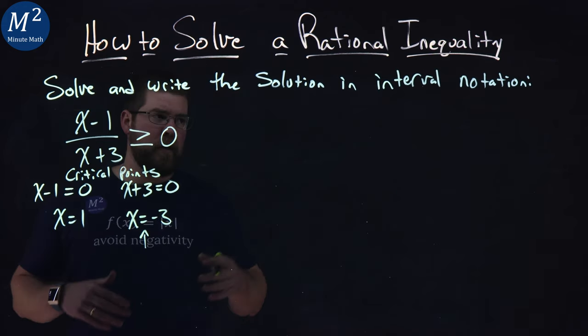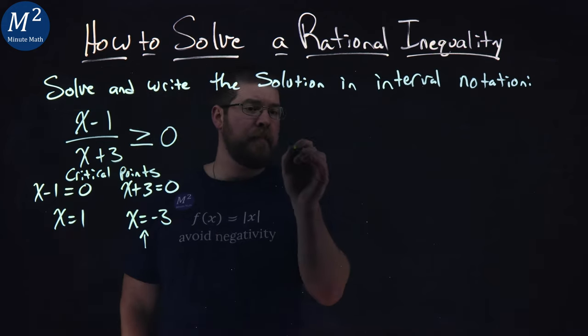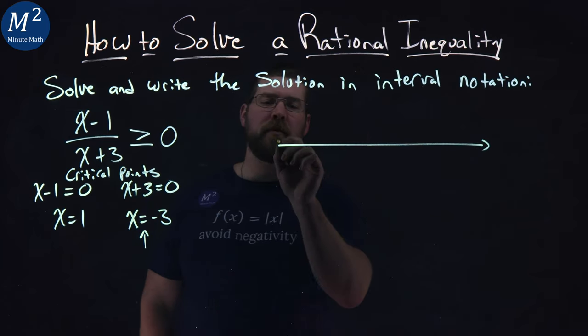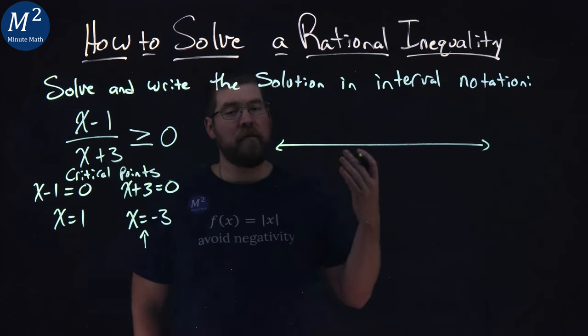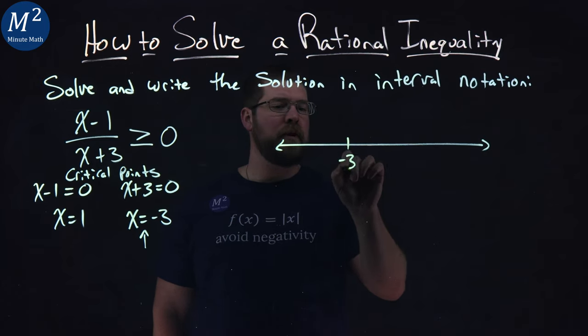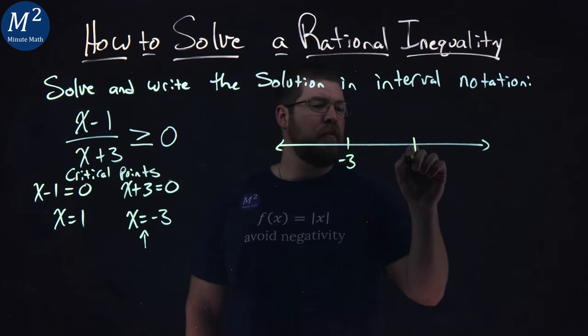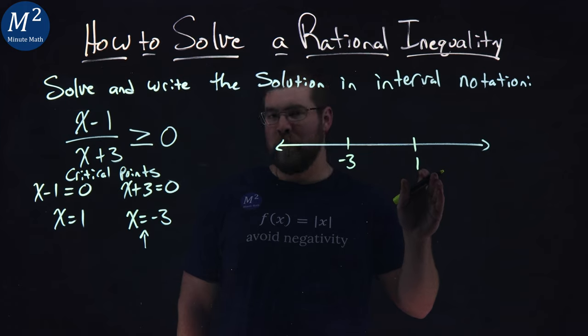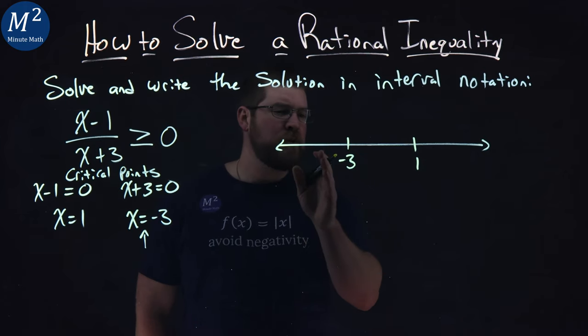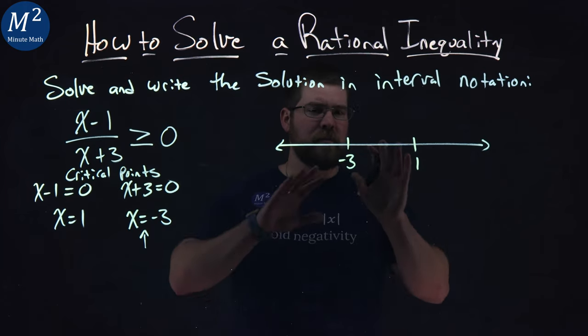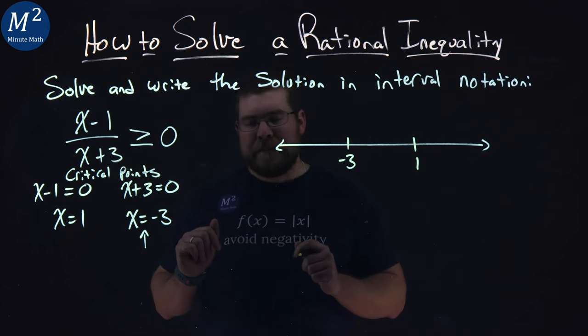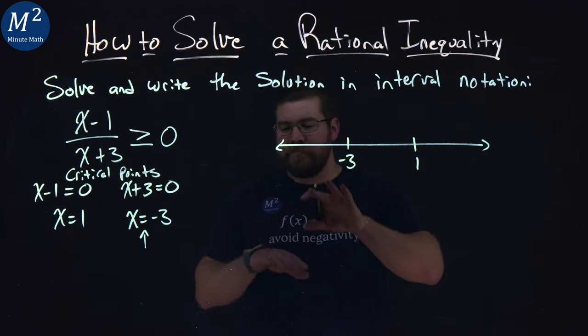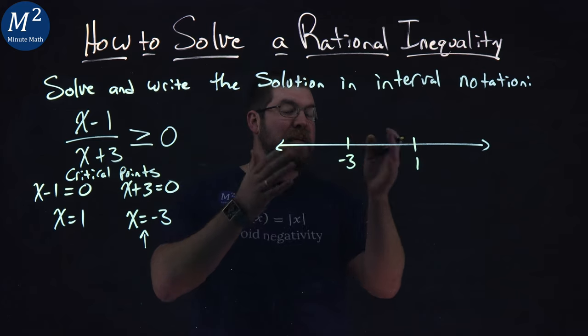So now we have our critical points. I'm going to create something on a number line. We don't have to put every single number on here. I think we're fine if we do this: negative 3 and positive 1. Make sure they're in order. Negative 3 to 1. Sometimes the full number line makes it more busy in my opinion.